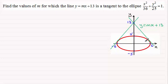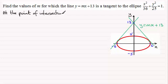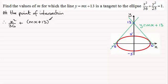It's a routine method — you might even want to pause the video and have a go yourself. So first of all, at the point of intersection between the tangent and the curve, I'm going to substitute mx plus 13 for the y. So we therefore have x squared over 36, plus — for y it's going to be all of mx plus 13, and that's squared, all divided by 25, equals 1.